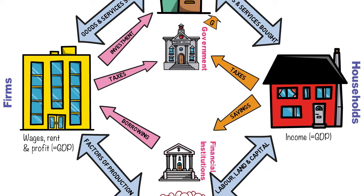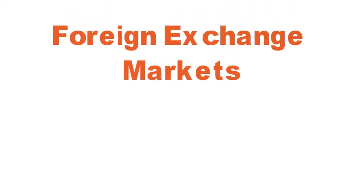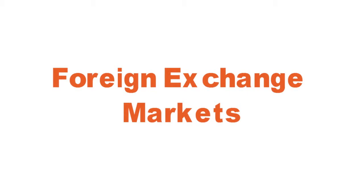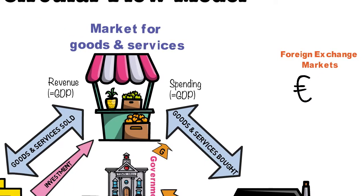Financial institutions get the money to loan out from savings from households. We also know that the government can interact with financial institutions and borrow from them, which is another way governments can spend in the economy. We also have on the top right-hand side of our circular flow diagram the foreign exchange markets, because in most modern economies they trade — there are exports, which are injections into the economy, and imports, which are leakages from the economy.